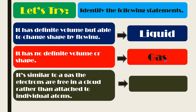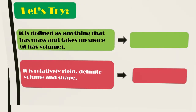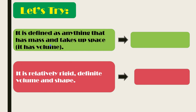The correct answer is gas. Third question: it is similar to a gas in that electrons are free in a cloud rather than attached to individual atoms. Yes, you are correct — the answer is plasma. Next: it is defined as anything that has mass and takes up space, or has volume.